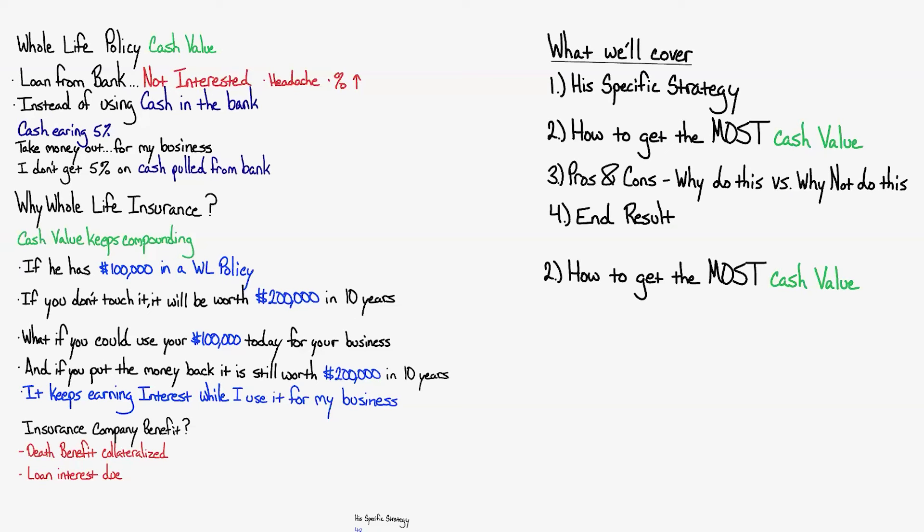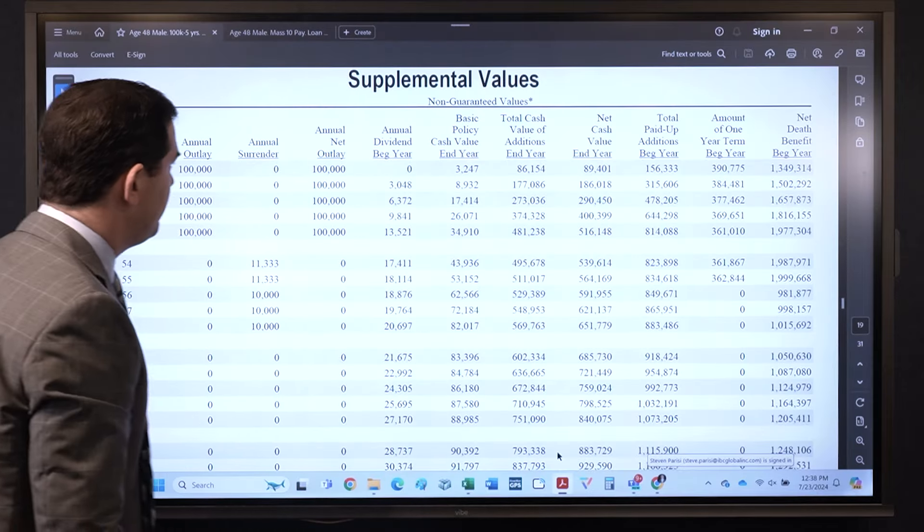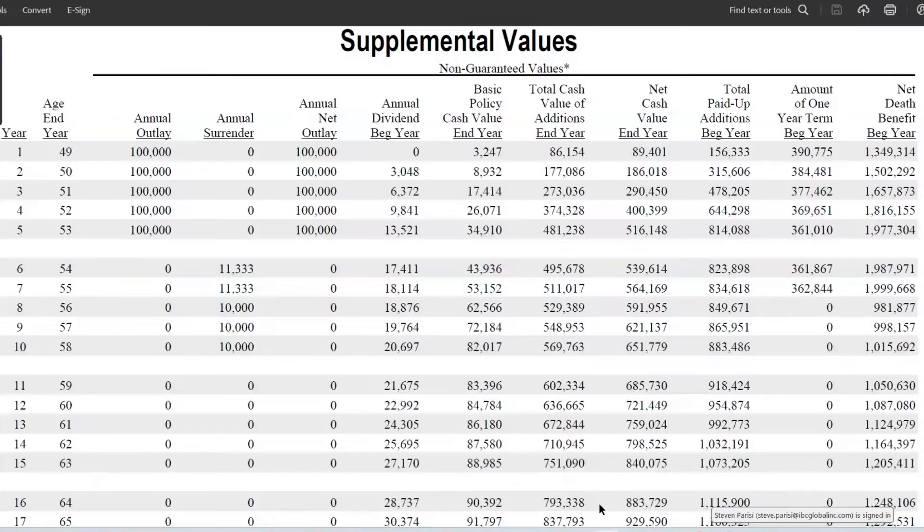So how do you get the most cash value? What we're going to look at is the actual policy illustration here. So here we go. Here we see $100,000 per year going into the policy for how long? For five years. Where you can see that it's over here, the annual outlay column. After the fifth year his out-of-pocket is zero forever.